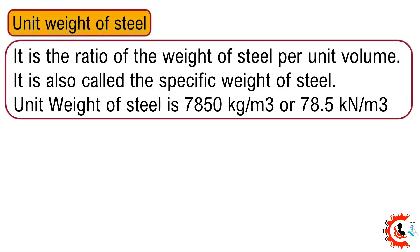Unit weight of steel. It is the ratio of the weight of steel per unit volume, and is also called the specific weight of steel. The unit weight of steel is 7850 kilograms per cubic meter, or 78.5 kilonewtons per cubic meter.